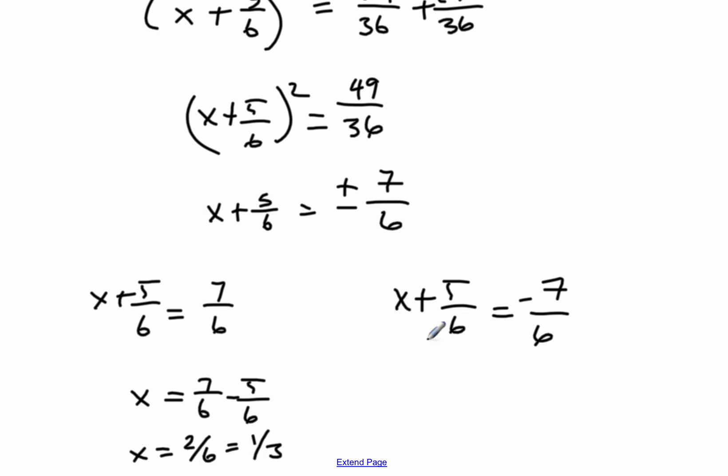And then on this side, I'll get x is equal to negative 12 sixths, or negative 2. So negative 2 and 1 third are my answers.